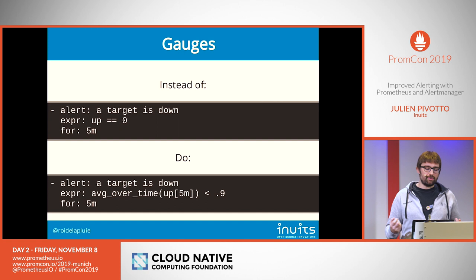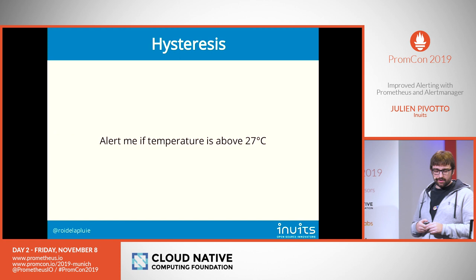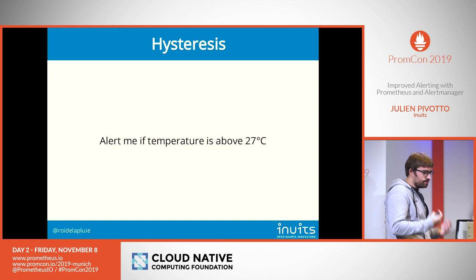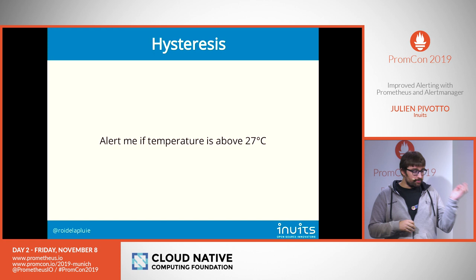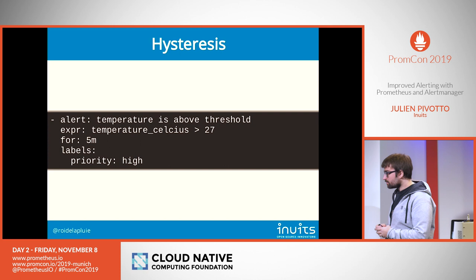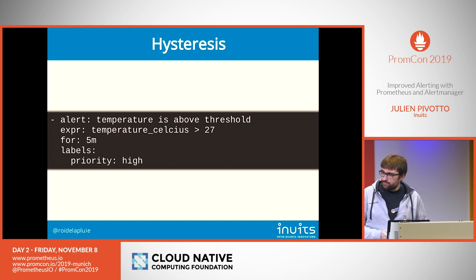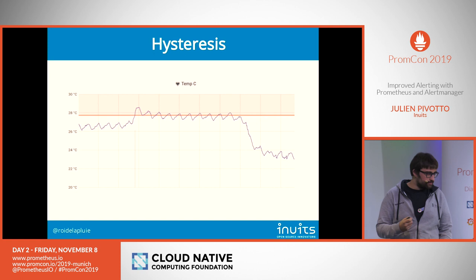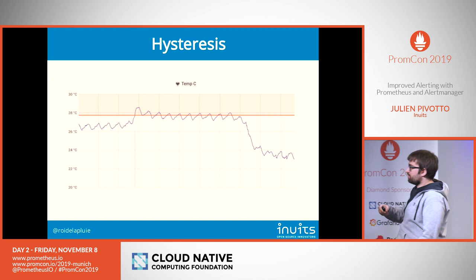The second case: we monitor a lot of parts of the stack including data centers with temperature sensors. You want an alert if the temperature is above 27 degrees for five minutes. But then you get this graph where the temperature goes up, then down, then up, then down. That's not helpful — you'll have 10 different alerts for that time frame, which won't actually tell you when the problem is solved.